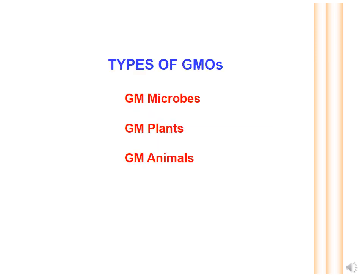Three types of GMOs can be developed: GM microbes, GM plants, and GM animals. Examples of GM microbes include GM bacteria. Examples of GM plants include Flavr Savr tomato, Bt cotton, Bt brinjal, and Golden rice. GM animals include GM mice, GM rabbit, GM sheep, and others.